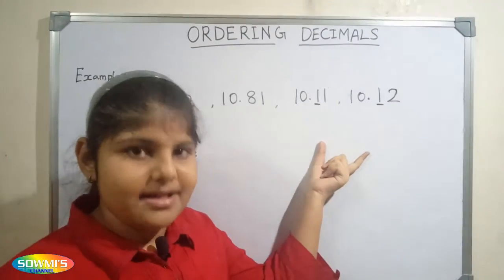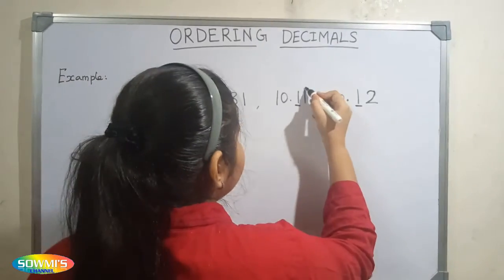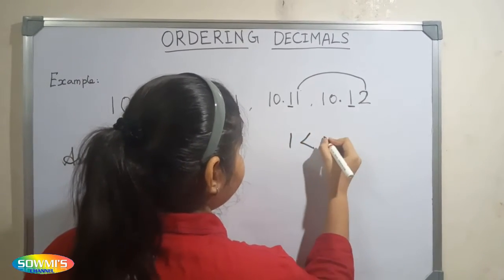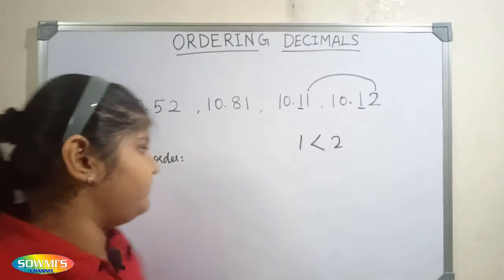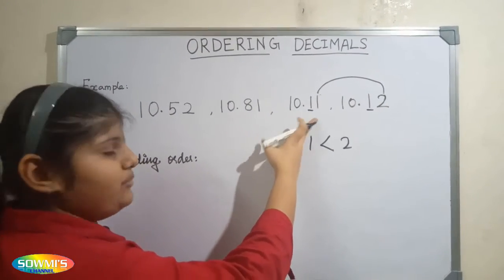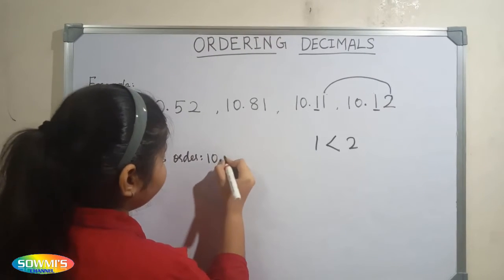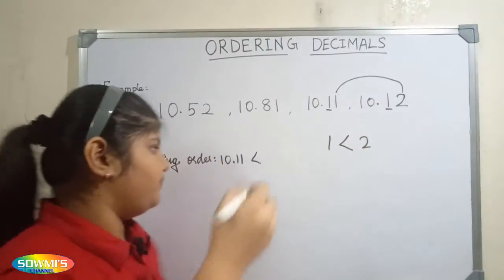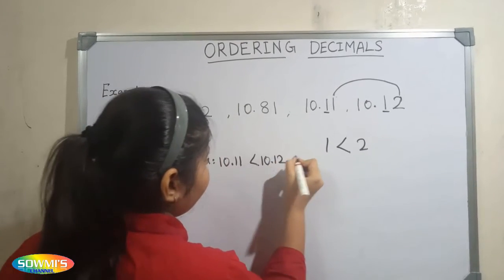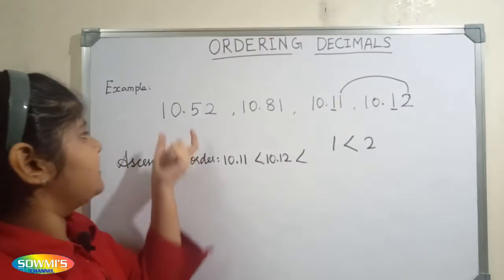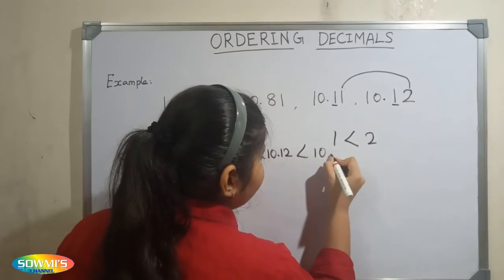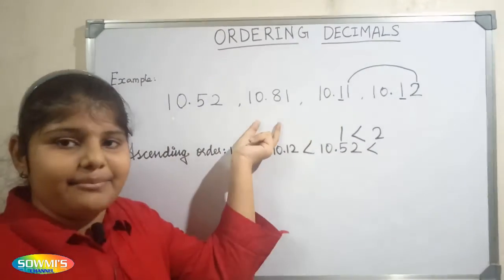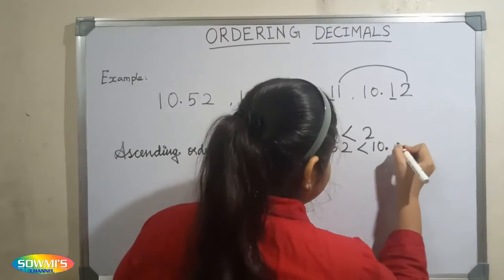First we will take the tenth place of the decimal part. The tenth place of the decimal part in both numbers is the same, so we will take the hundredth place of the decimal part. Here 1 is the lesser digit, so the smallest number is 10.11, next 10.12, the next number is 10.52, then 10.82, and the largest number is 10.81.